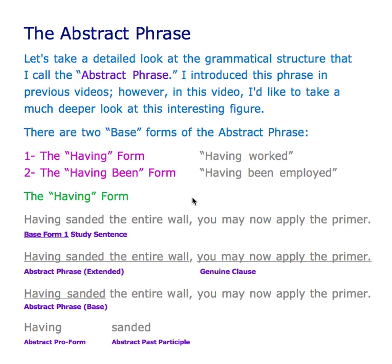There are two base forms of the abstract phrase. One is the having form, such as in the phrase 'having worked.' The second one is the having been form, and an example would be 'having been employed.'